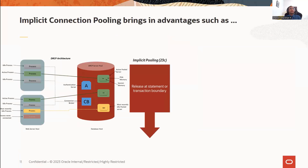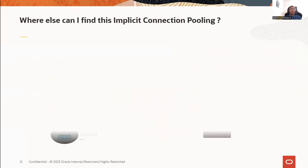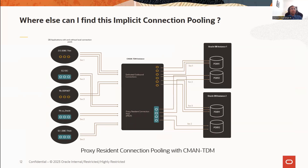The advantages of implicit connection pooling include improved scalability through better multiplexing on the database side, especially useful for mid-tier applications. It reduces pool handling on the application side, and support is available with the Oracle client library, meaning minimal code changes are required — only configuration details such as the connect string settings we discussed. Implicit pooling is expected to support higher concurrency for mid-tier through optimal database resource usage. You can also do implicit connection pooling with CMAN, the database proxy for Oracle database. CMAN has its own session multiplexer similar to DRCP called PRCP (proxy resident connection pooling), and we have provided the same implicit pooling feature to PRCP as well.